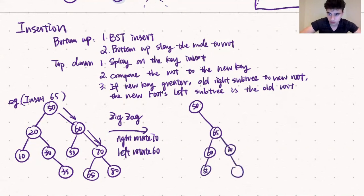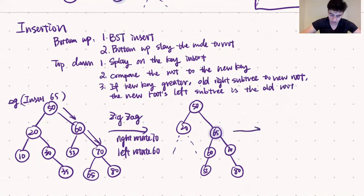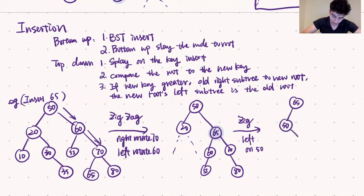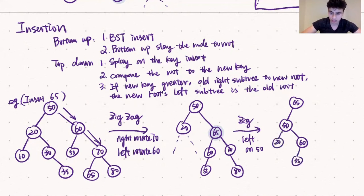Now 65 is one level below the root, so we reevaluate. We need a zig since we're one level below the root, so we do one left rotation at 50, bringing 65 to the root of the entire tree, with 50 as its left child. We append the original left child of 65 — the subtree rooted at 60 — to the right of 50, with 55 as its left child. 50's left child remains the same rooted at 20, and 65's right child is its original right child rooted at 70.